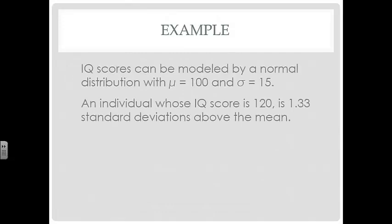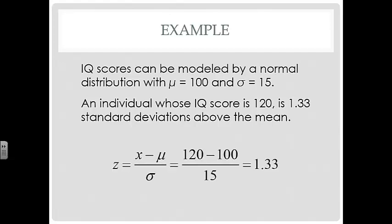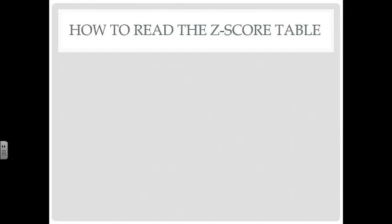One example where we use normalized distributions is IQ scores, which can be modeled by a normal distribution with mean 100 and standard deviation 15. An individual whose IQ score is 120 is 1.33 standard deviations above the mean, so their Z-score is 1.33.